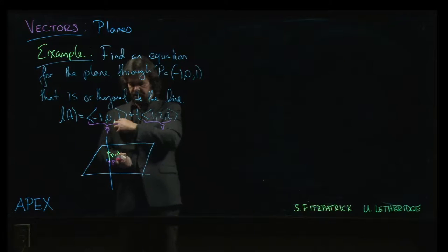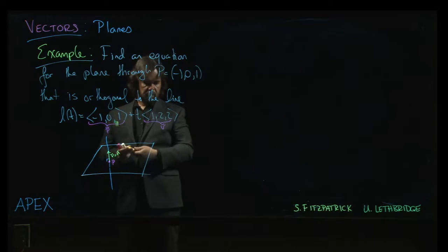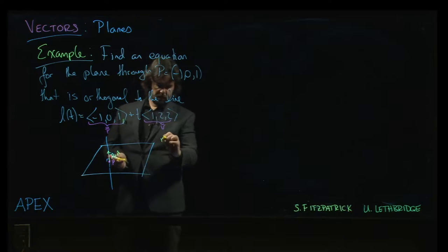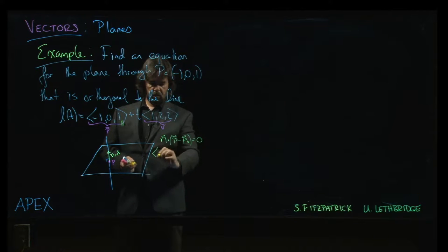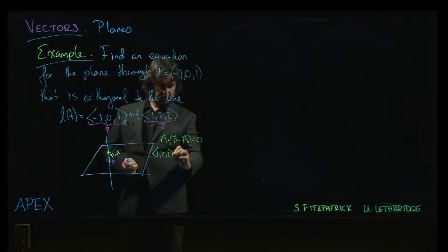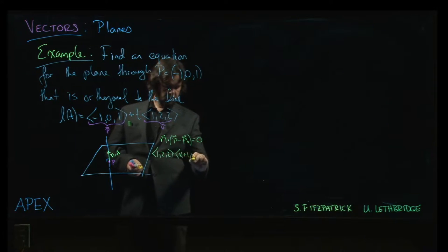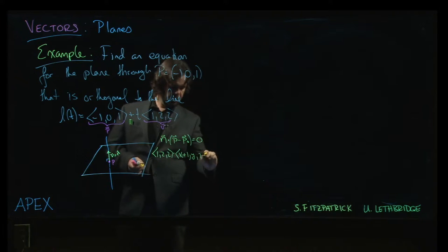So with that information in place, we can, if we want to write in this kind of vector form of the equation, we have that. So the normal vector is 1, 2, 2. And then this is going to be x minus minus 1, so x plus 1. y minus 0 is just y. And then z minus 1 equals 0.